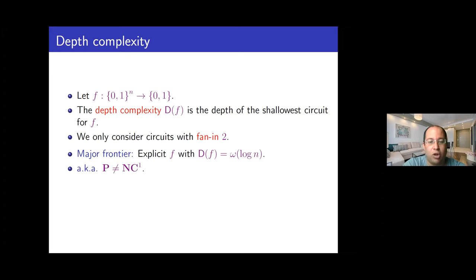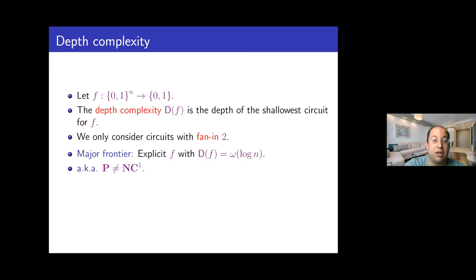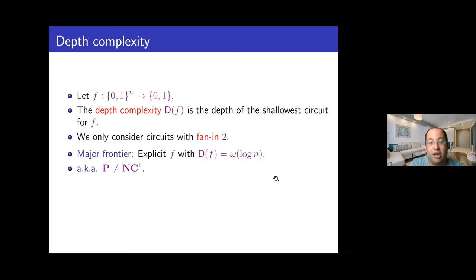It's also a very interesting question in its own right. Are there functions that can be computed efficiently by a sequential program but cannot be computed efficiently by a circuit of small depth — which is a model for parallel computing? The depth complexity of a function measures how hard it is to compute the function on a parallel computer. So what we're really asking is: are there functions that can be computed efficiently on a sequential computer but cannot be computed much faster on a parallel computer?